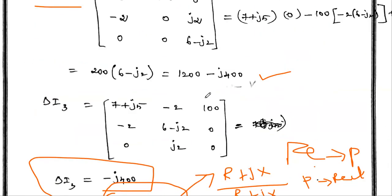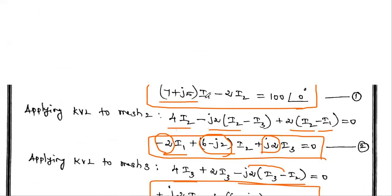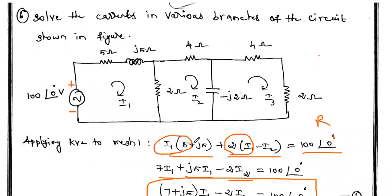This completes the AC circuit mesh analysis problem. The key difference from DC circuits is that in DC circuits there is no imaginary term — only real parts. In AC circuits, both real and imaginary quantities appear. The AC voltage source is represented in polar form: 100 is the magnitude and 0° is the angle. To solve such problems, you must know how to convert between rectangular and polar forms.